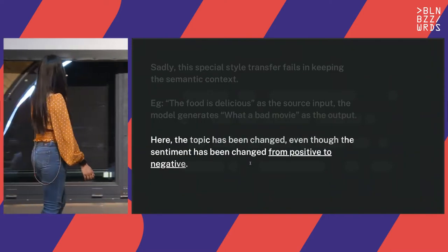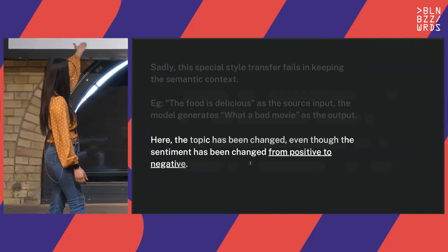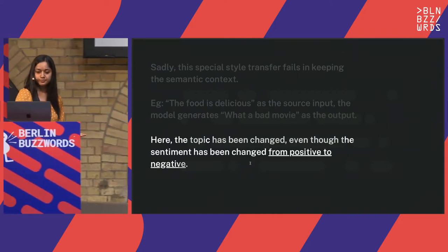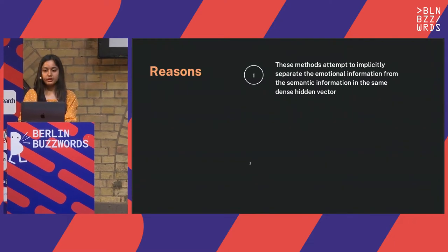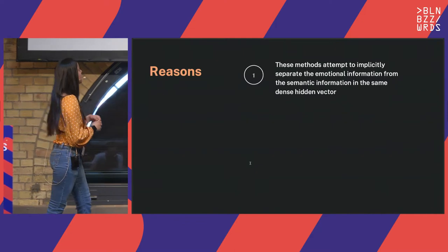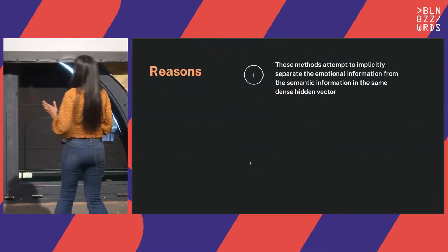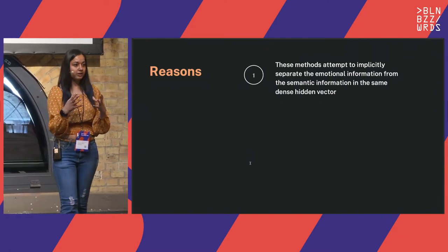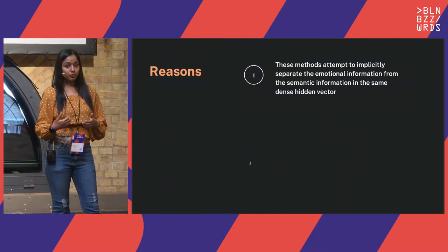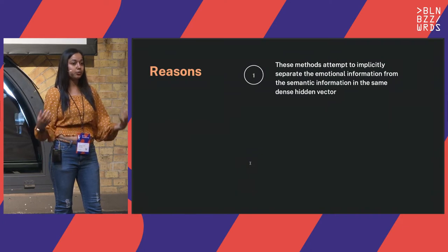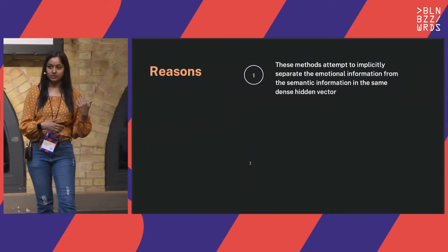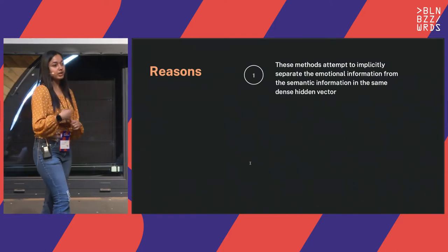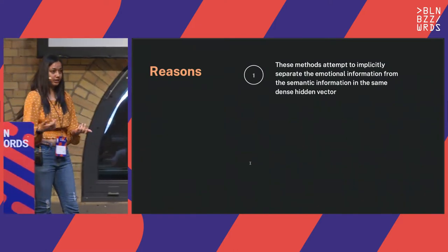The topic has been changed from positive to negative sentiment but the context has been completely eradicated. There are three major reasons why this happens. One is that semantic information gets separated when we separate the emotion and the neutral module, so the semantic information gets lost. We get the emotion module and the neutralization module but we are not able to combine them to talk about the same context as the source input. That is one major reason we lose semantic information when applying a style transfer.